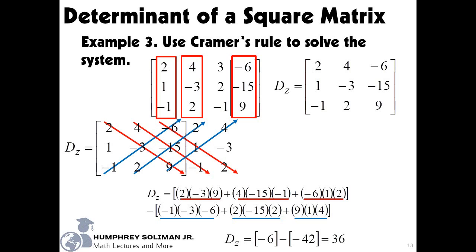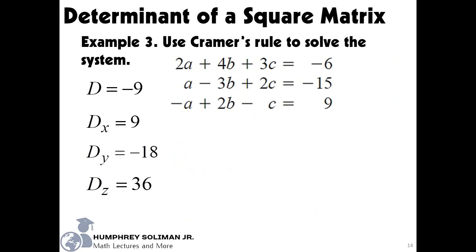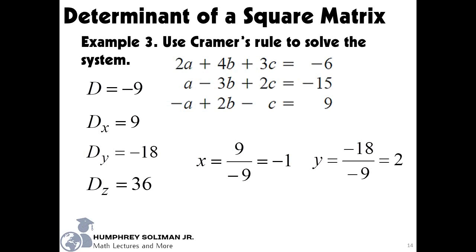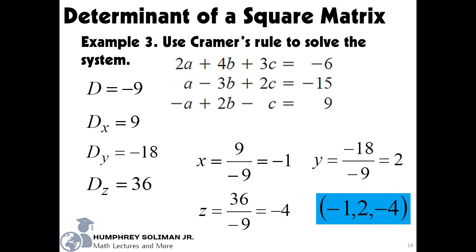Now that we already have d, dx, dy, and dz, we can have the values for x, y, and z. If we divide dx by d, x equals negative 1. If we divide dy by d, y equals 2. If we divide dz by d, z equals negative 4. The solution for the system is negative 1, 2, and negative 4.